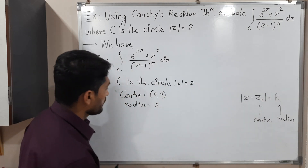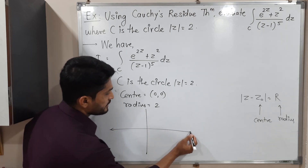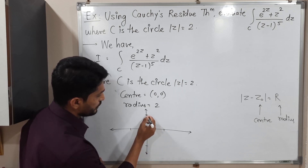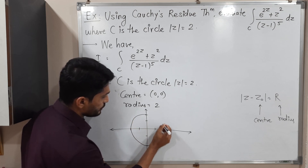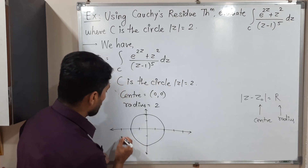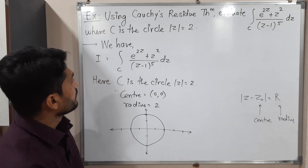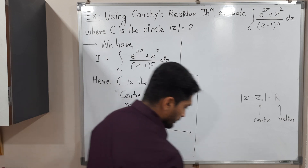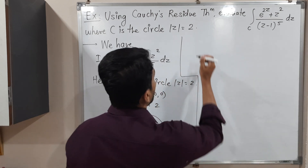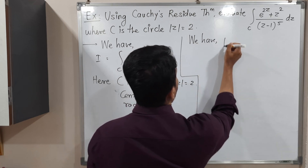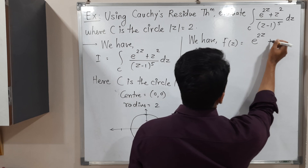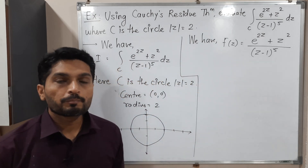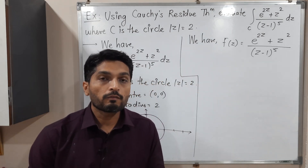Let me draw the circle. This is the imaginary axis and the real axis, with scaling 1, 2, −1, −2 on both axes. So the circle has center (0, 0) and radius 2. After that, we will consider the given function — we are integrating this function, so let us call it F(Z) = E raised to 2Z plus Z squared, all upon Z minus 1 raised to 5.